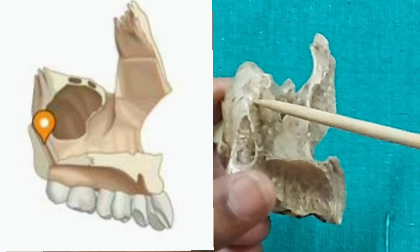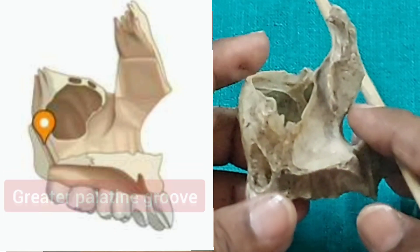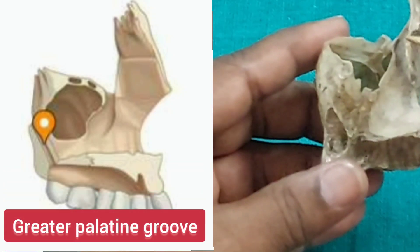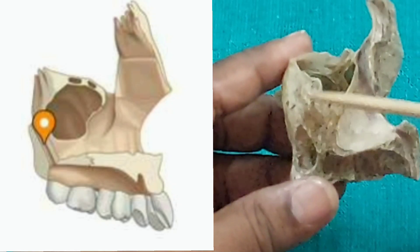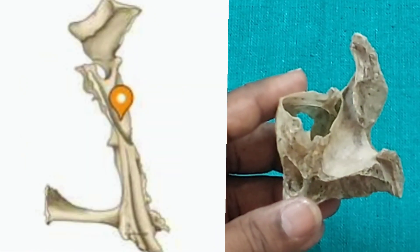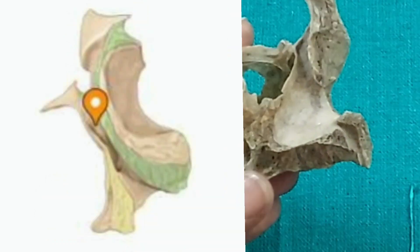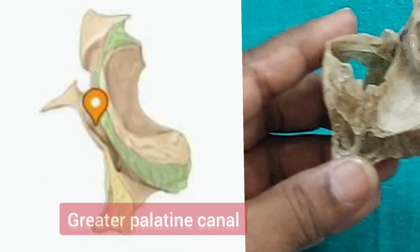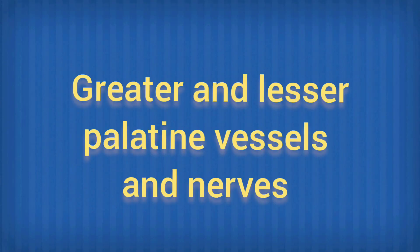On the nasal surface, there is a groove called the greater palatine groove. When it articulates with a similar groove on the perpendicular plate of the palatine bone, it forms the greater palatine canal. Through this canal pass the greater and lesser palatine vessels and nerve.